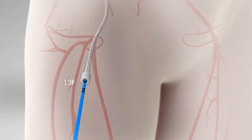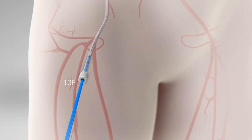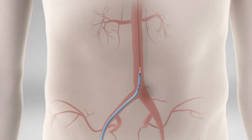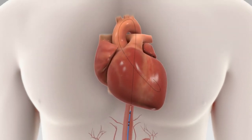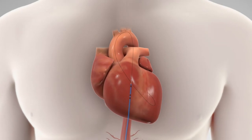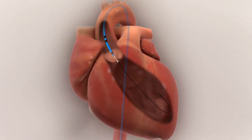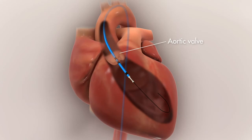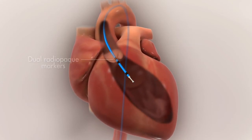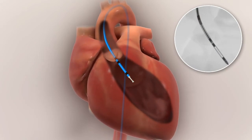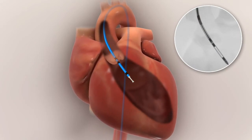The catheter is then inserted over a guide wire into the femoral artery via a 13 French introducer sheath and advanced over the aortic arch so that the distal end of the device is positioned across the aortic valve. The PHP catheter is positioned properly for deployment when the dual radiopaque markers are at the level of the aortic valve.